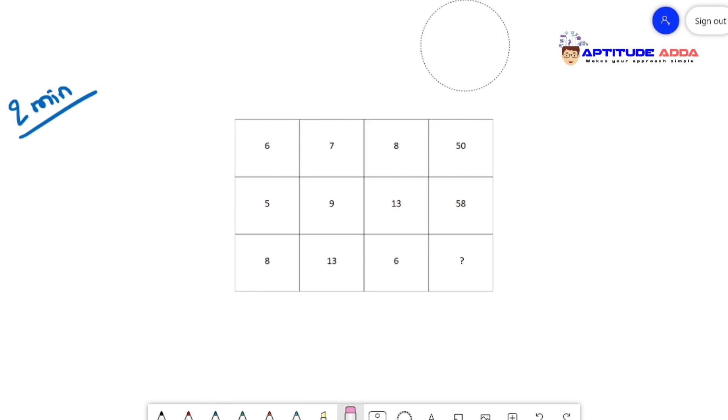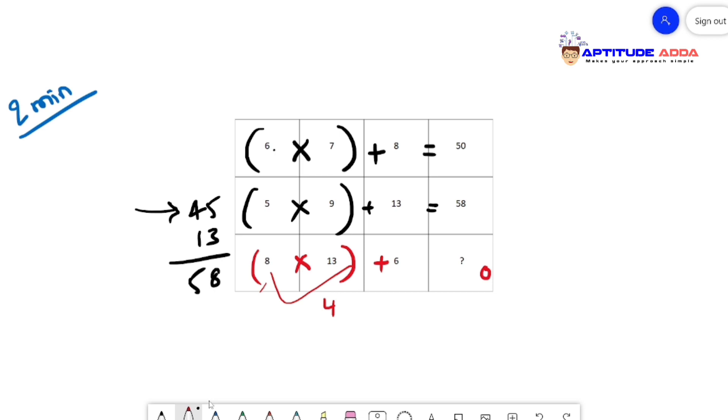The logic is very simple - we need to multiply the first two columns and then add the third to get the last column. Six times seven is 42, plus 8 gives you 50. Let me check the second row: 4 times 9 is 45 plus 13 is 58. The logic works. For the last row, 8 into 13 is 104 plus 6 gives you 110, so 110 is the answer.